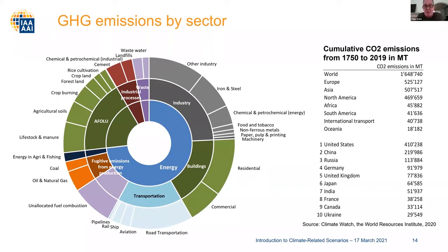CO2 emissions come from different sources: burning of fossil fuels, industry, buildings and heating, transportation, and agriculture — both from crop burning and soils, but also from having fewer parts of the environment that can capture CO2. On the right, you can see the contribution of different parts of the world aggregated since the beginning of the industrial revolution in 1750. In total, the estimate is that about 1.6 trillion tons of CO2 have been emitted by humans, mostly by Europe, Asia and North America. On a per capita basis, Europe and North America emitted the most during the last 270 years.